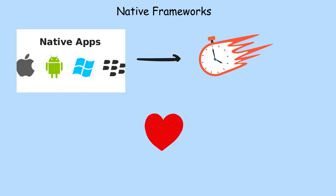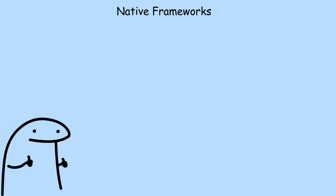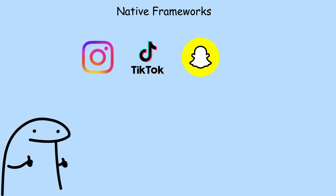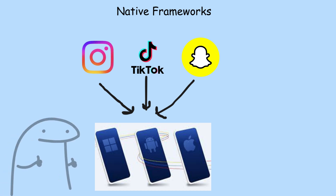Native apps feel faster, smoother, and handle animations perfectly. That's why big apps like Instagram, TikTok, and Snapchat all use native development. They need that flawless experience.